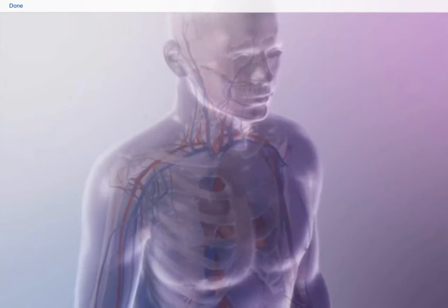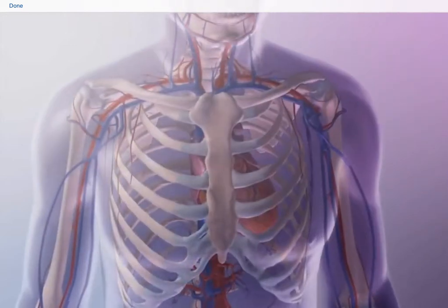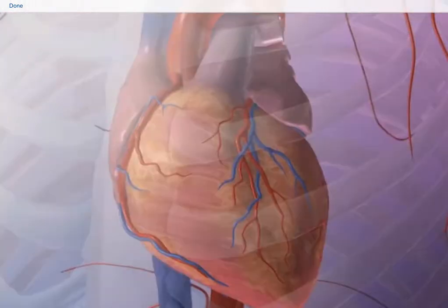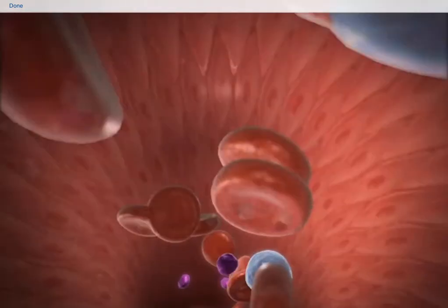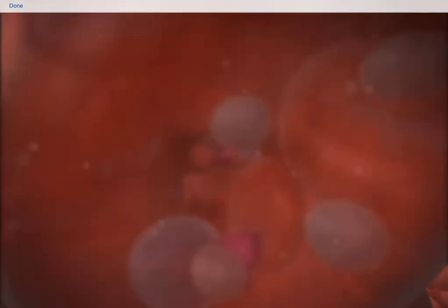The circulatory system is composed of the heart and the blood vasculature, the arteries and the veins. Arteries carry blood away from the heart and veins carry blood back to the heart.